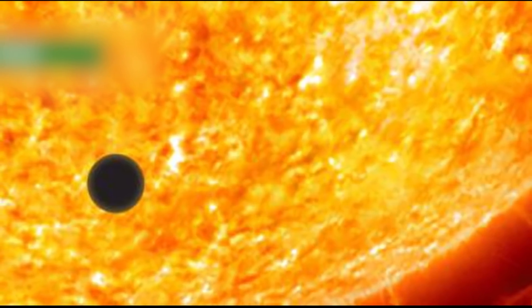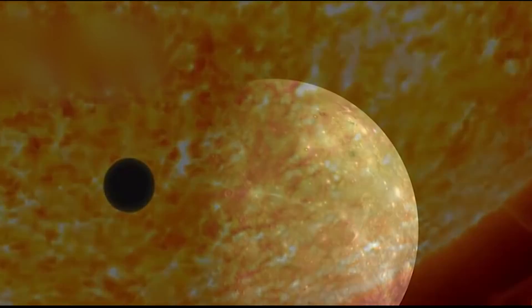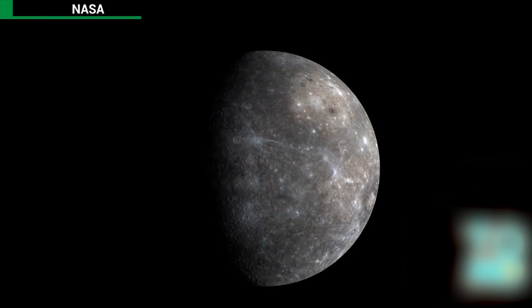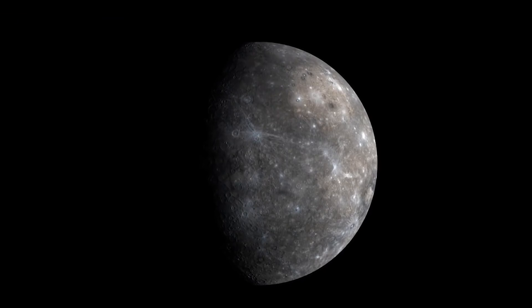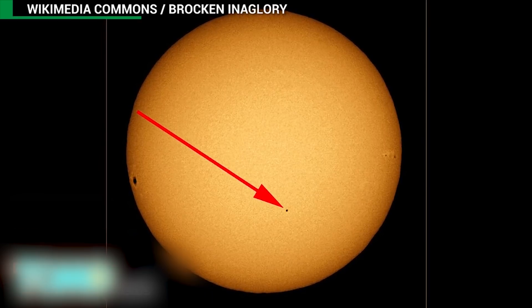Mercury about to make a rare appearance across the sun's face. Our solar system's smallest planet will be visible on Monday, as it passes between Earth and the sun, a rare spectacle that only occurs a few times a century.